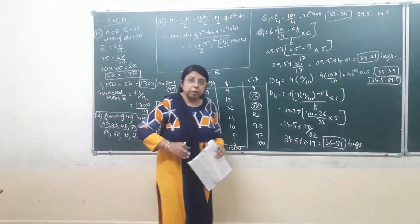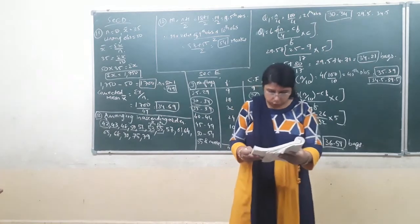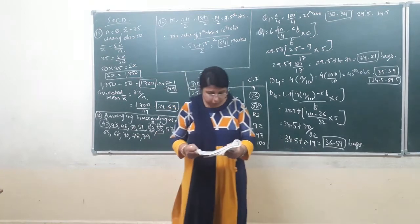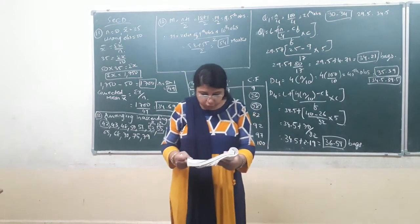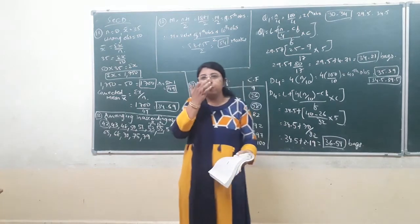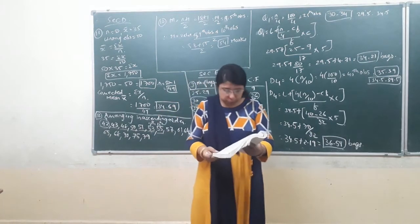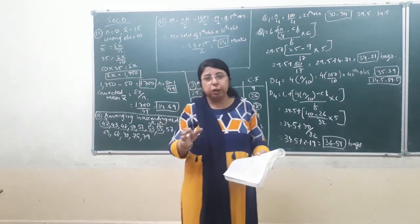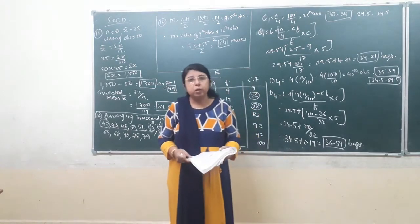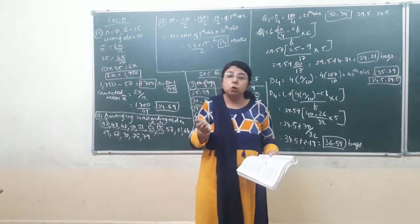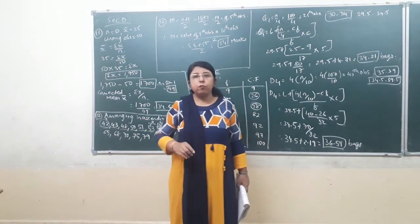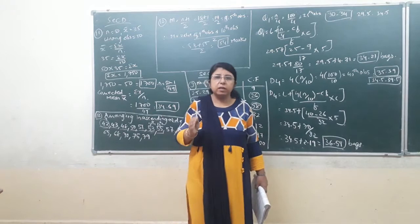Now moving on to section E, question number 3, on the same page that is 117. The question reads: the number of bags sold in a grocery shop each day are shown in the following table. The number of bags is given in continuous frequency distribution, divided into classes. From the classes you can make out that the data are of inclusive type. We have to find the exclusive classes in case of finding quartiles, medians, deciles, or percentiles.